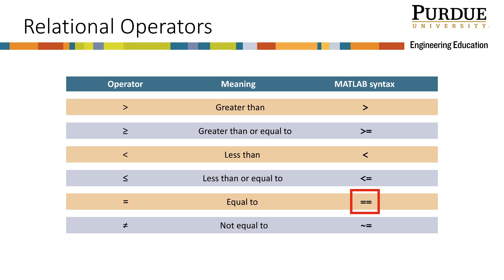When the values are equal, MATLAB returns a 1, or true. When they are not equal, MATLAB returns a 0, or false. Another important thing to note is that when typing the relational operators for greater than or equal to, less than or equal to, or not equal to, the equal sign must be the second character.